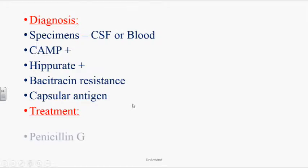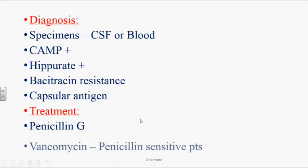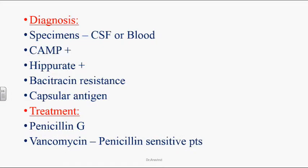Treatment: Group B Streptococci (Streptococcus agalactiae) can be treated with penicillin G, which is the drug of choice. For patients sensitive to penicillin, vancomycin can be given.